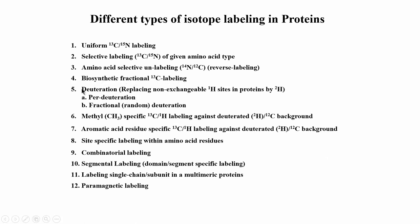Deuteration is the next important isotope labeling approach, in which we replace all non-exchangeable hydrogens in the protein with 2H. Non-exchangeable protons are those attached to carbon — the CH protons. NH and OH protons in the protein exchange with water and are therefore exchangeable, whereas CH, CH2, and CH3 protons can be deuterated. We will see different types of deuteration in more detail when we come to that topic.